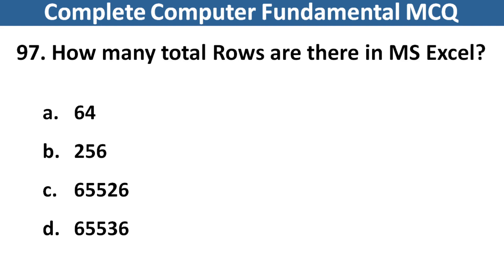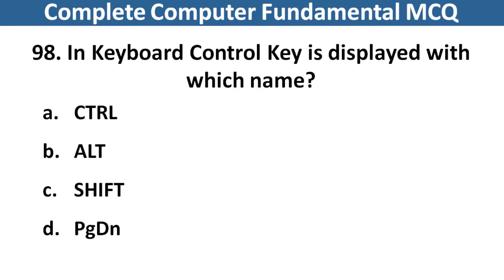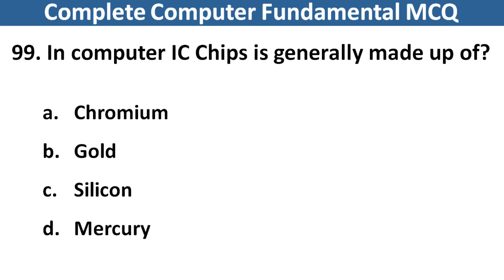How many total rows are there in MS Excel? Right answer is option D, 65536. Next question: In keyboards, control key is displayed with which name? Right answer is option A, Control — CTRL. Next question: In computers, IC chips are generally made up of? Right answer is option C, Silicon.